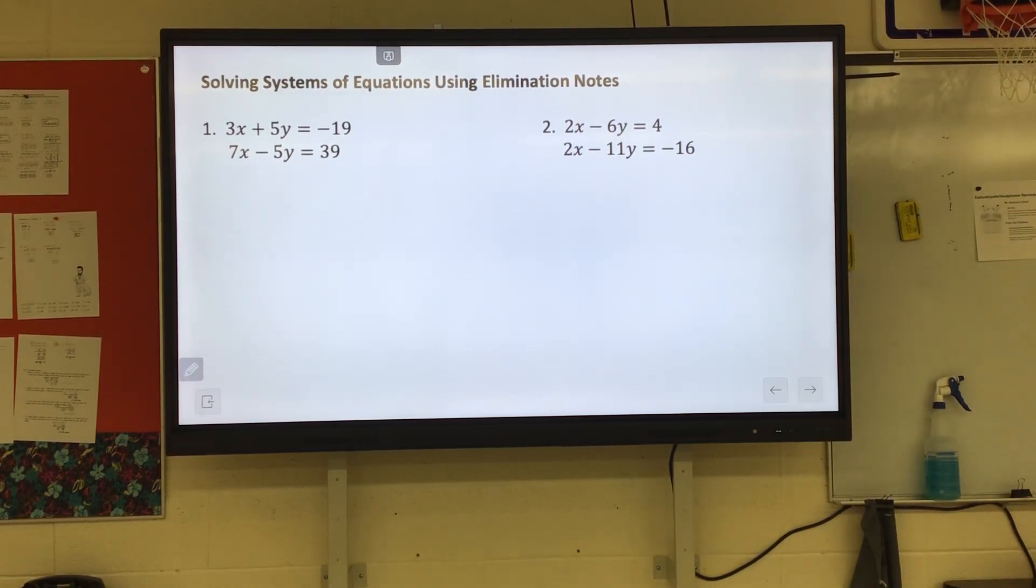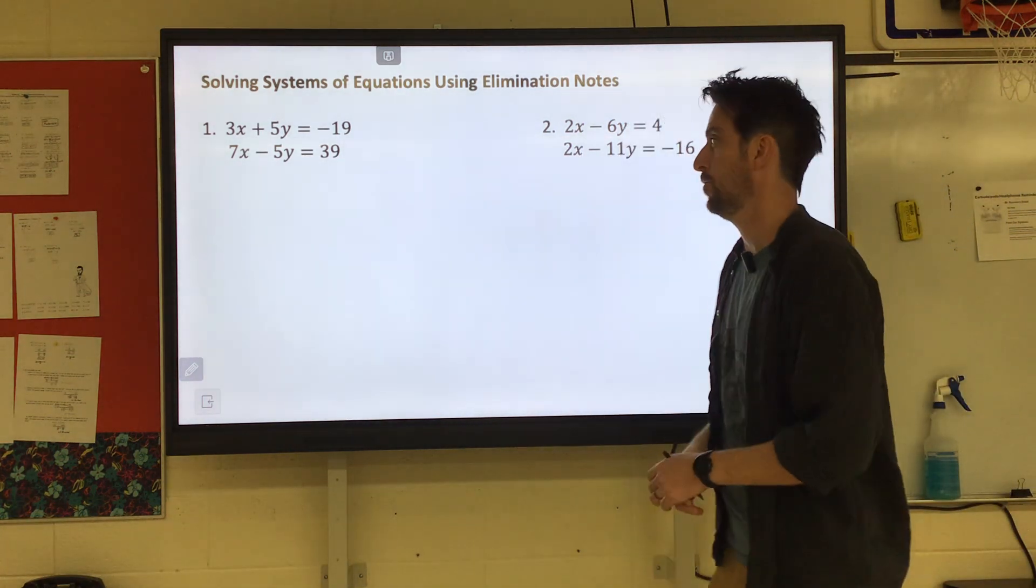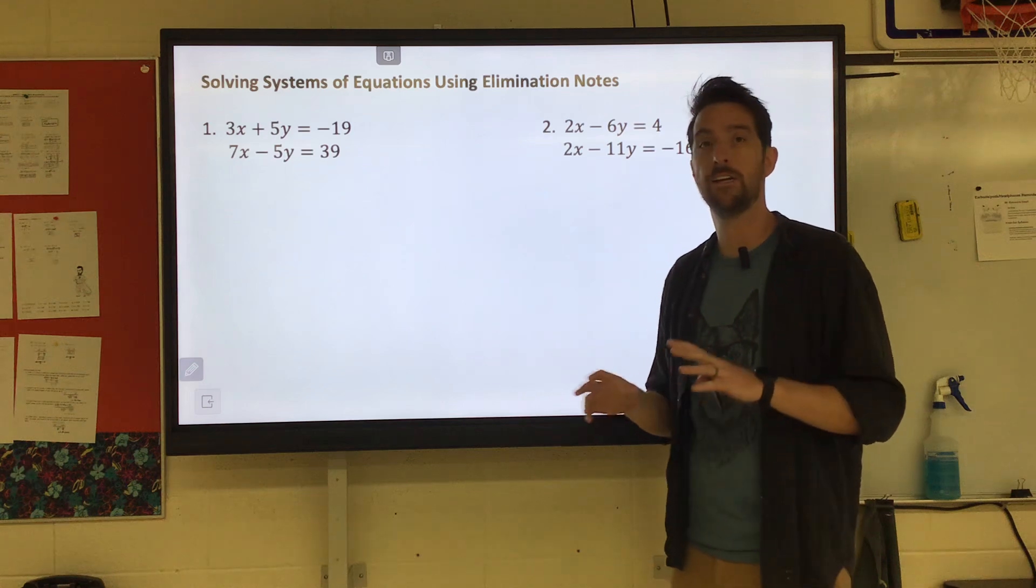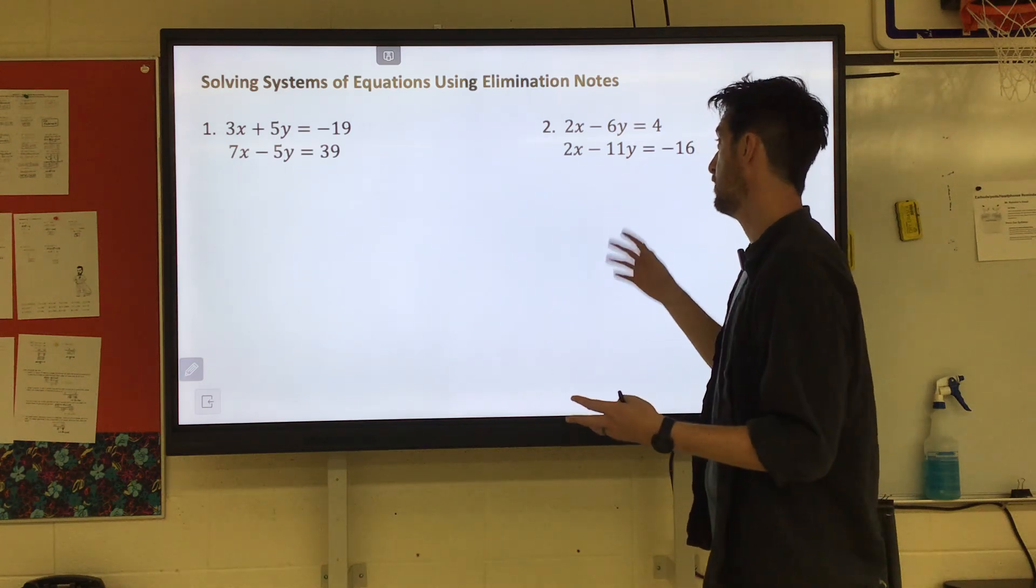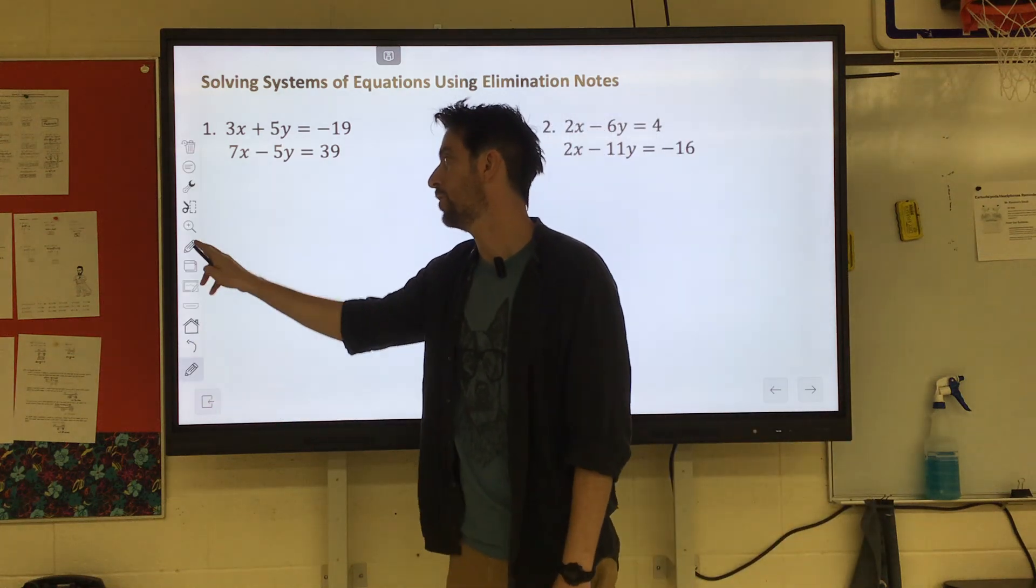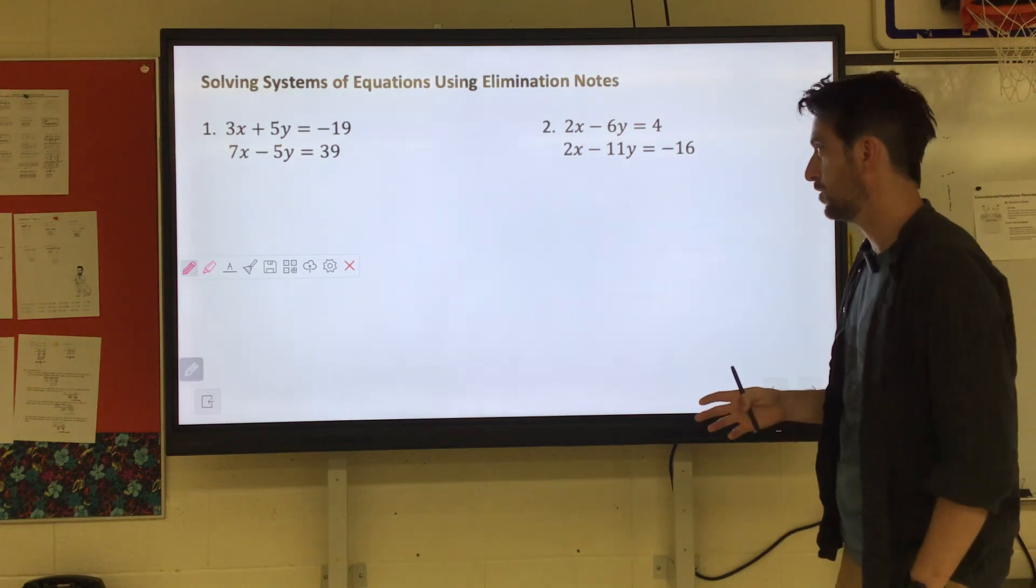Today we're doing the final way to solve these systems of equations and it's called elimination. You can do substitution on anything, but sometimes that requires a lot of work. Like if you look at number two, we would have to take one of these equations and get X or Y by itself in order to solve it.